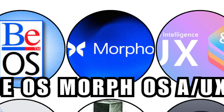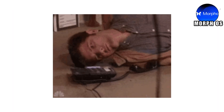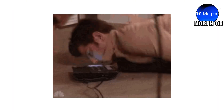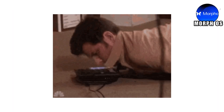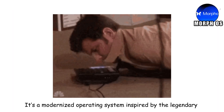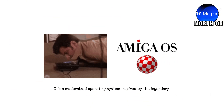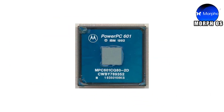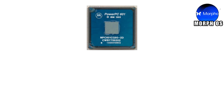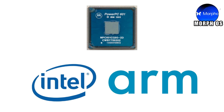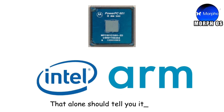MorphOS is what happens when a fanbase refuses to move on. It's a modernized operating system inspired by the legendary Amiga OS, built to run on PowerPC hardware long after the rest of the world moved to Intel and ARM. That alone should tell you its destiny.